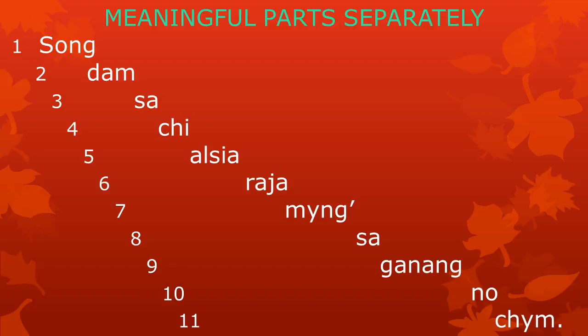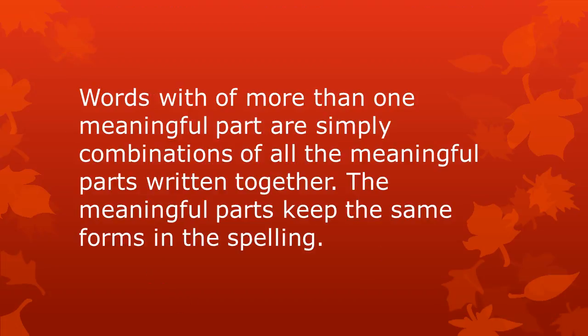Here you see them all separately. The meaningful parts are Song, Dam, Sa, Chi, Al, Siya, Raja, Meng, Sa, Ganang, No, and Chum. As we have learned before, words with more than one meaningful part are simply combinations of all the meaningful parts written together. The meaningful parts always keep the same form in the spelling.